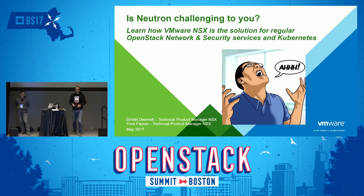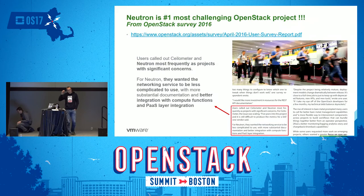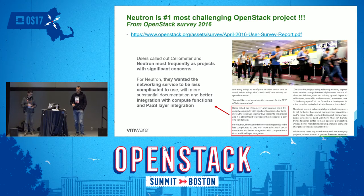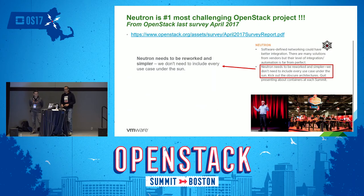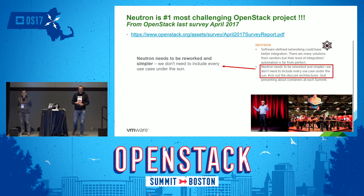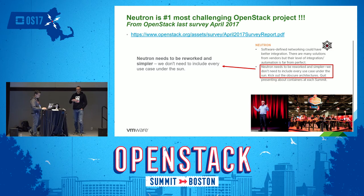I'm not the only one. If we look at the OpenStack survey from 2016, Neutron with Ceilometer was considered the most challenging project and very complex to use. And in the latest one released a week ago, Neutron is still considered pretty hard and needs to be reworked and made simpler. So I feel not that dumb — I'm not the only one feeling it's a complex project.